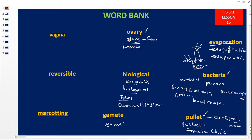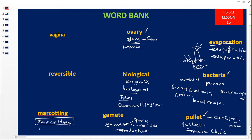This word is written as gamete. In the previous lesson — lesson 14 — we said a gamete means a reproductive cell. In male animals that is a sperm; in a female animal it is called an ovum, and when there are very many we call them ova. Then we have the word marcoating, which we discussed in the classification of plants. It is a form of asexual reproduction under artificial vegetative propagation in plants.